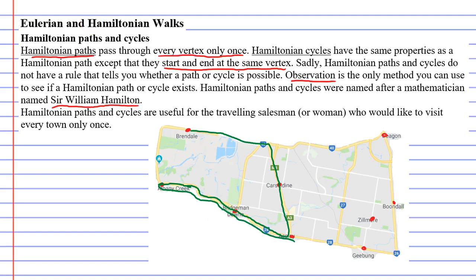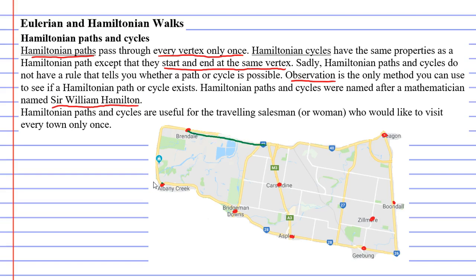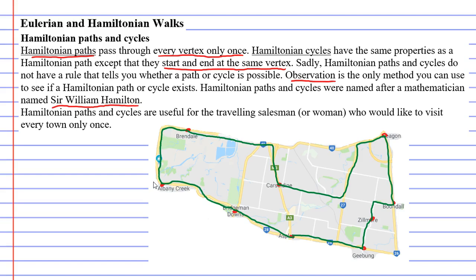A Hamiltonian path will definitely exist here, and it might even have a Hamiltonian cycle. Remembering that the only way to check is by observation — by actually tracing and checking. Starting at Brendale again, this time we want to end back at Brendale, so let's try for a Hamiltonian cycle. Notice that we passed through every town only once and ended up back at Brendale — like a traveling salesperson who lives at Brendale, went all the way around, passed every town, and came back home.